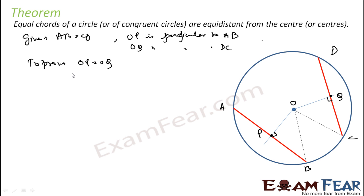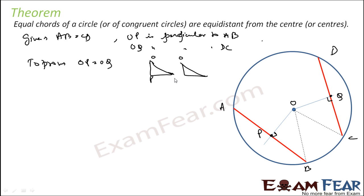We can take two triangles — triangle OPB and triangle OQC. OB is equal to OC since they are both radii. These two angles are 90 degrees. PB is equal to QC — why? Because AB is equal to CD (given), divide both by two. We know that the perpendicular from the center to the chord will bisect the chord.